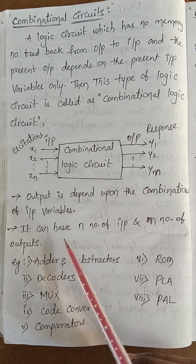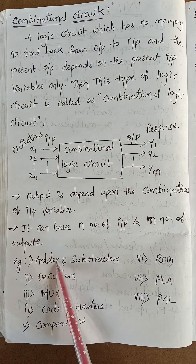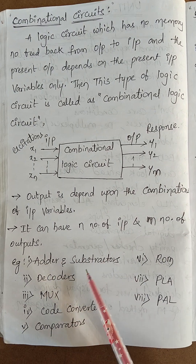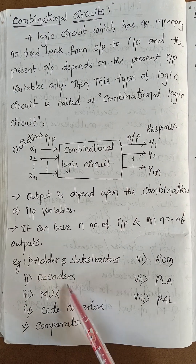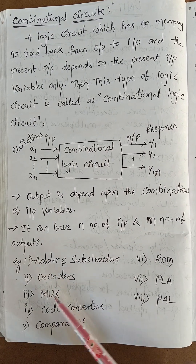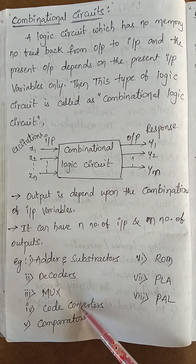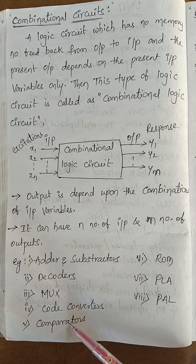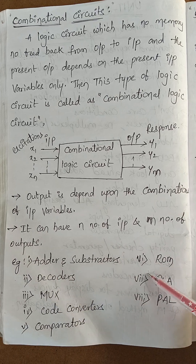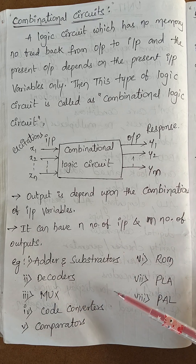Examples of combinational circuits are: adders, subtractors, decoders, multiplexers, code converters, comparators, ROM, PLA, and PAL.